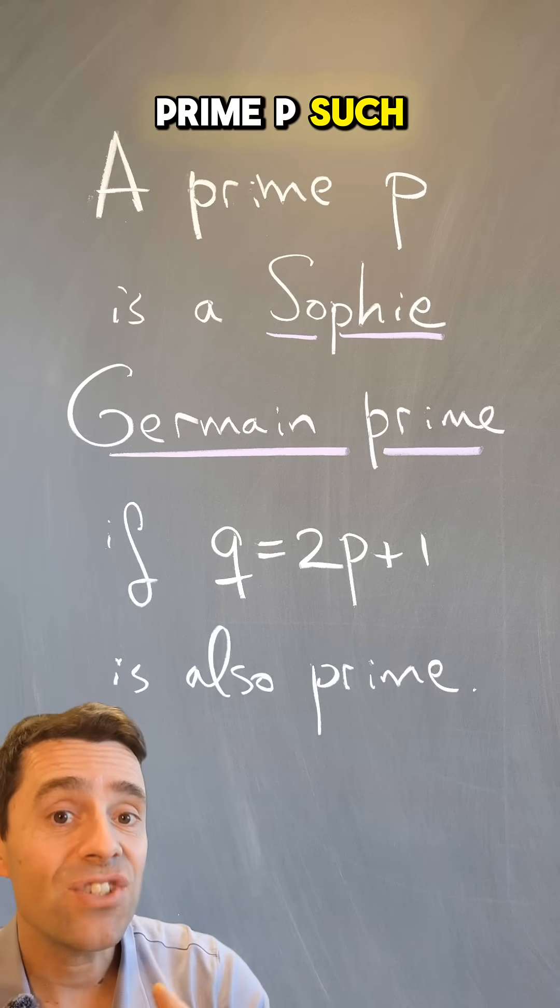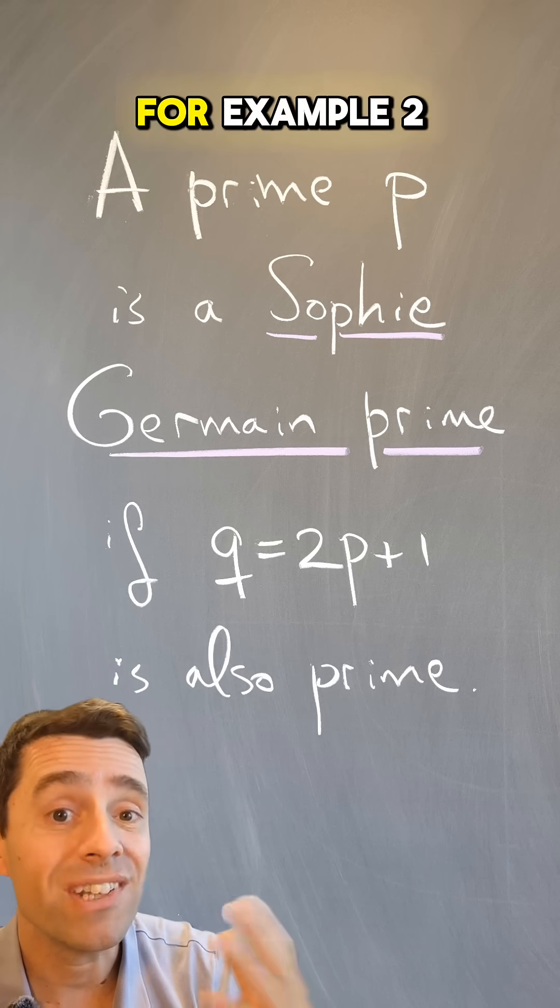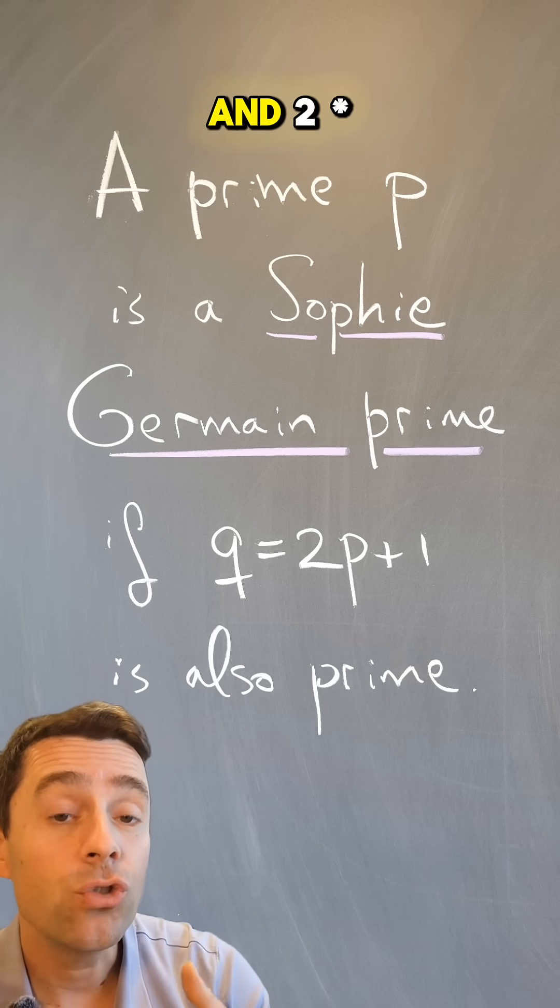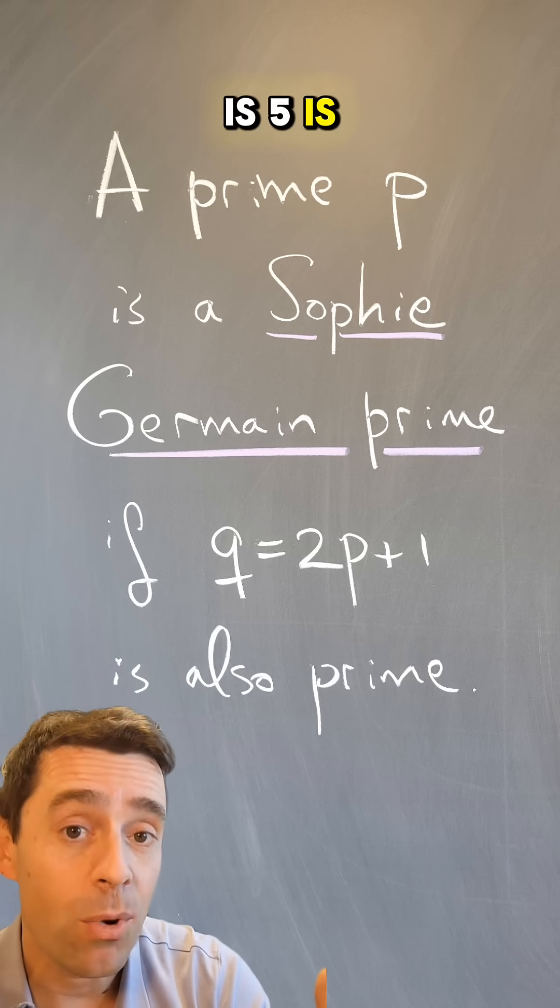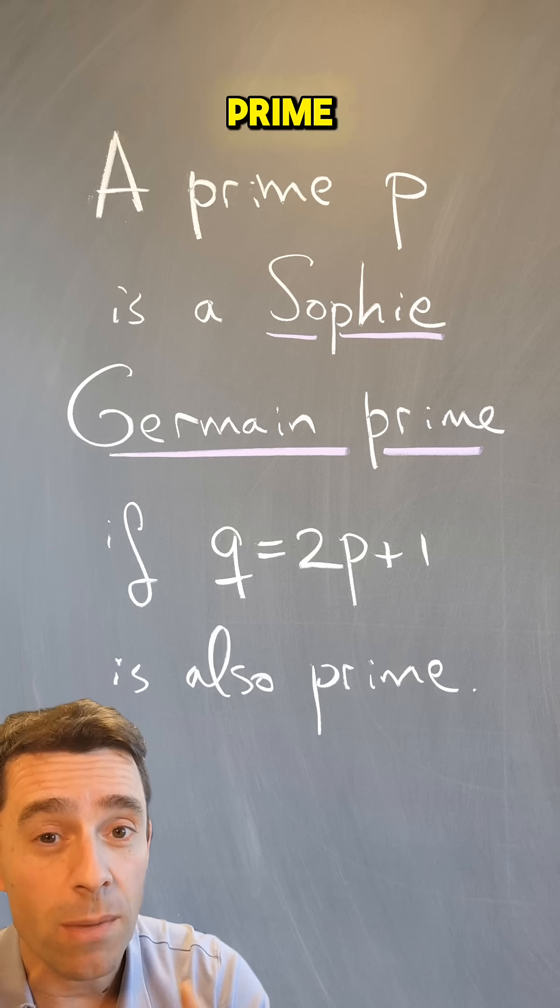A Sophie Germain prime is a prime p such that 2p plus 1 is also prime. For example, 2 is prime and 2 times 2 plus 1 is 5 is prime, so 2 is a Sophie Germain prime.